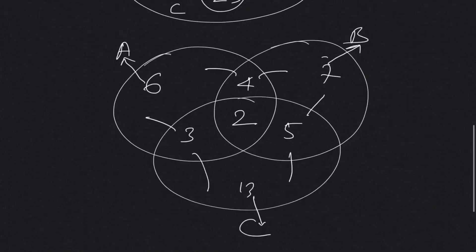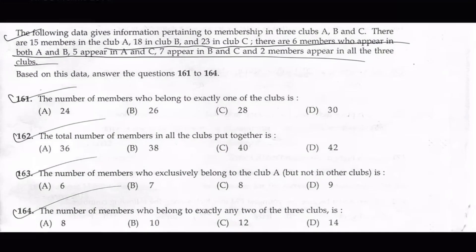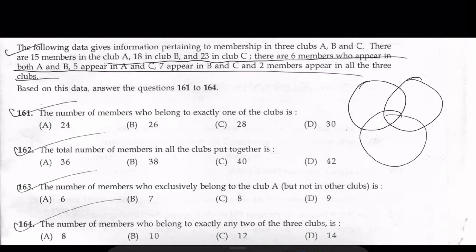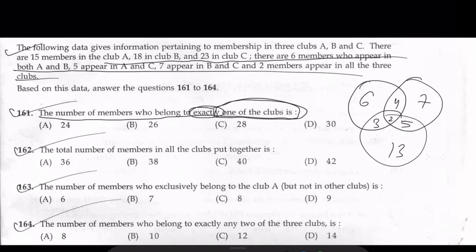Let's go back to the question. Question 161: the number of members who belong to exactly one of the clubs. Exactly one club means only A, only B, or only C. Only A is six, only B is seven, only C is thirteen. So six plus seven plus thirteen gives us 26. The answer is B.